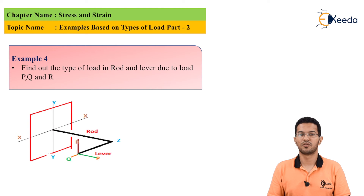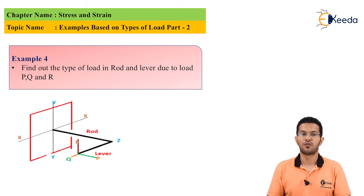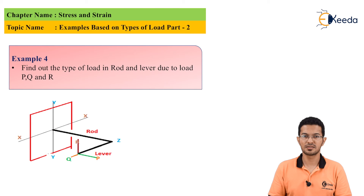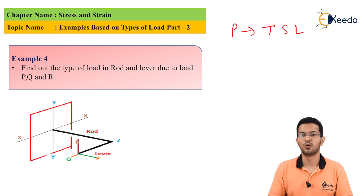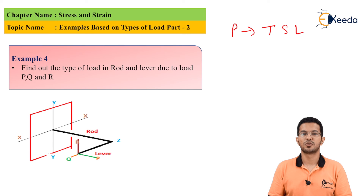Now we'll go for example number 4. Find out the type of load in the rod and lever due to loads P, Q and R. For the lever, load P is transverse shear load because it is parallel to the surface and passing through the axis. For the rod, load P is normal to the surface but does not pass through the axis. Hence, load P is eccentric axial load for the rod.